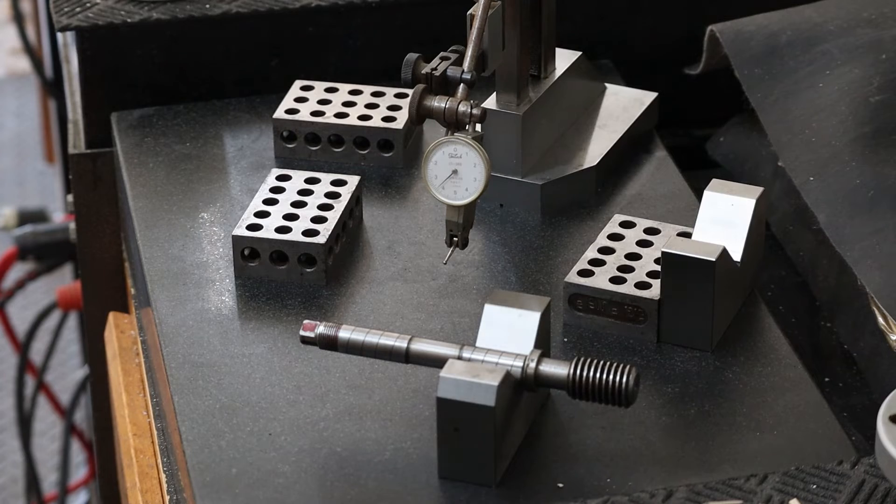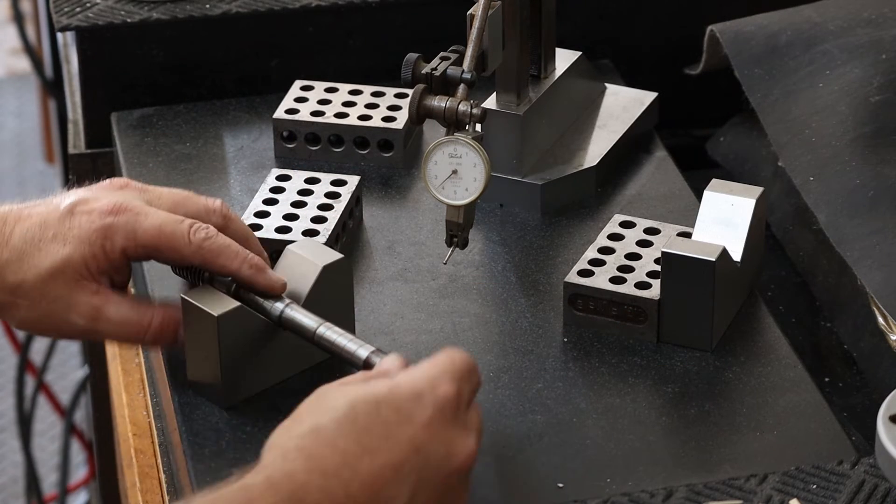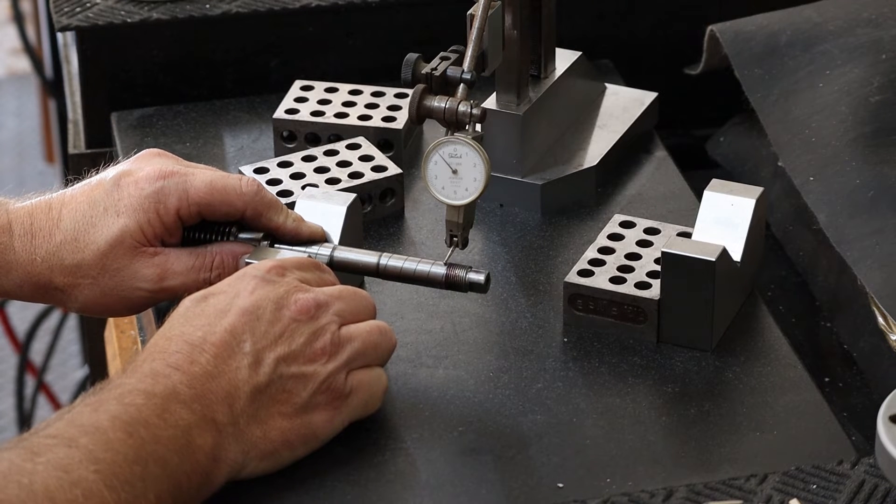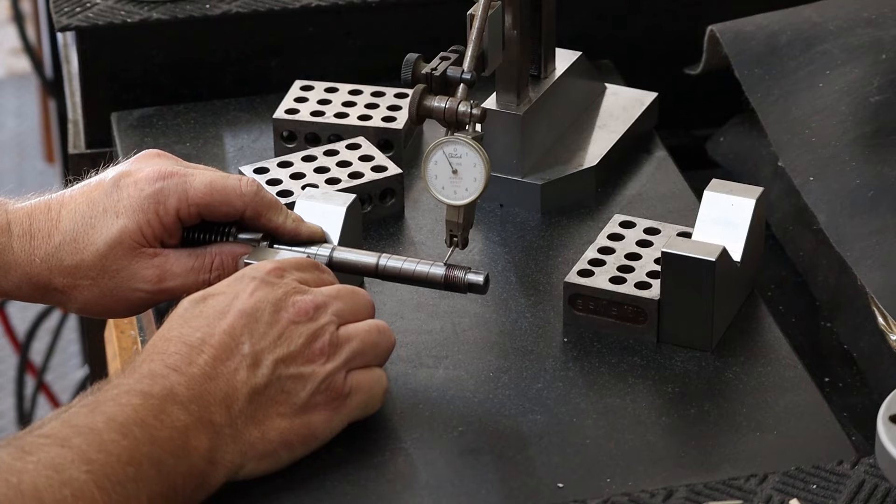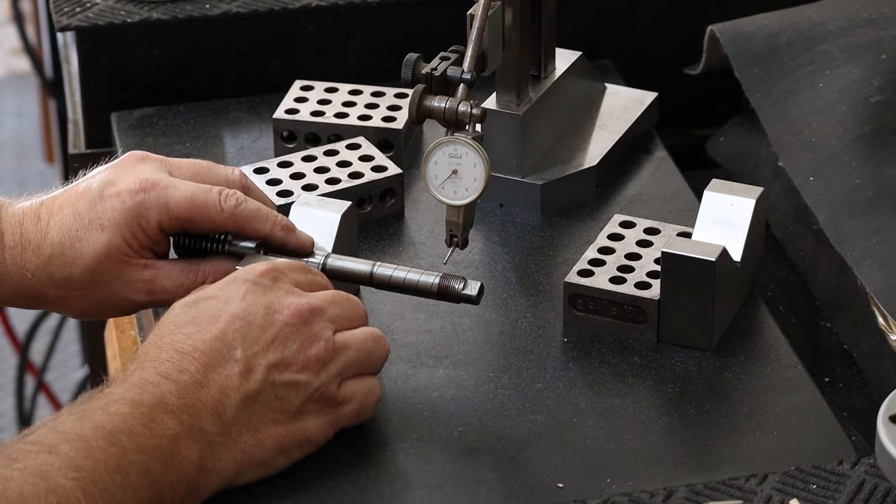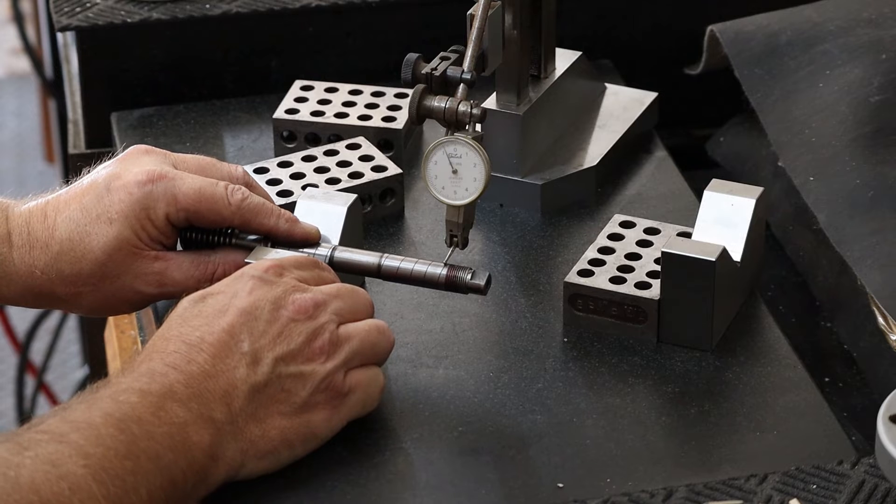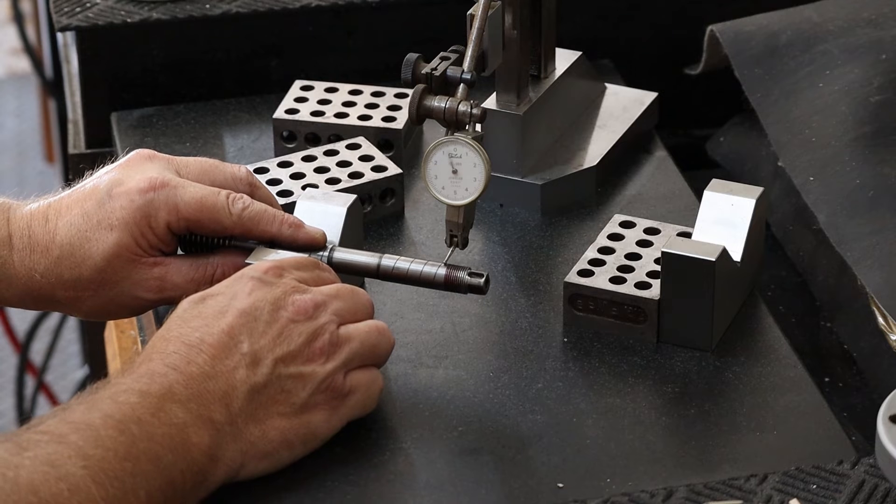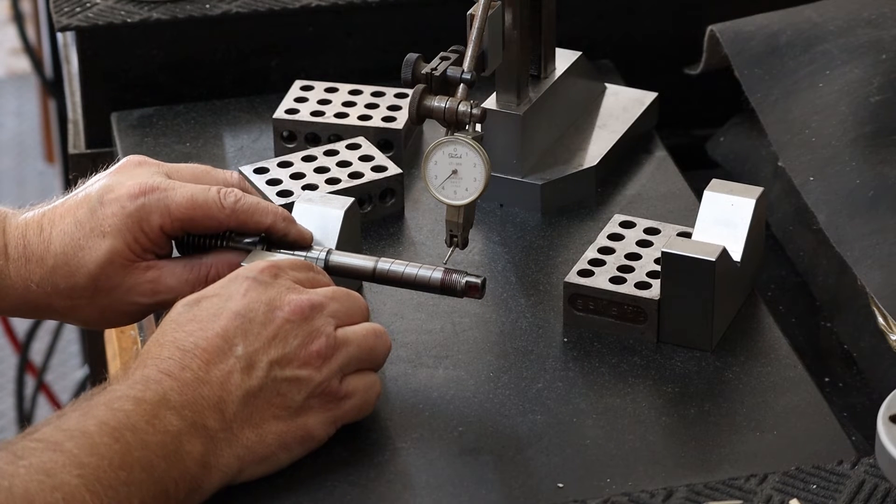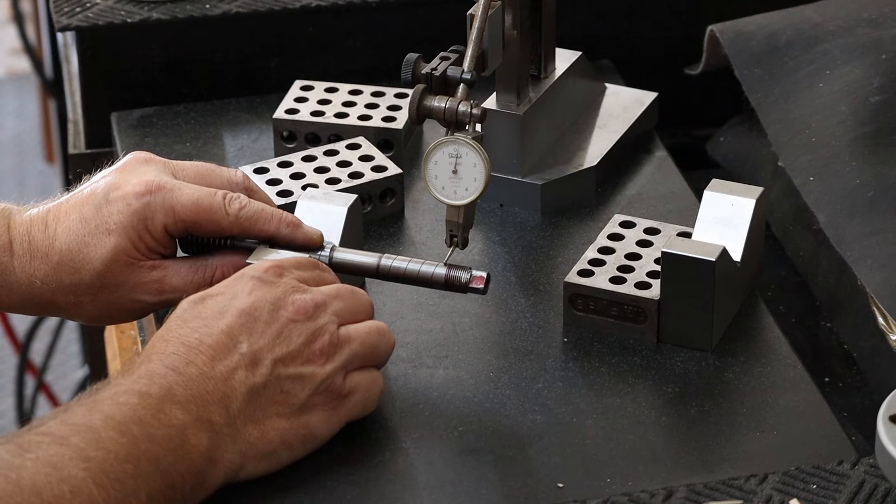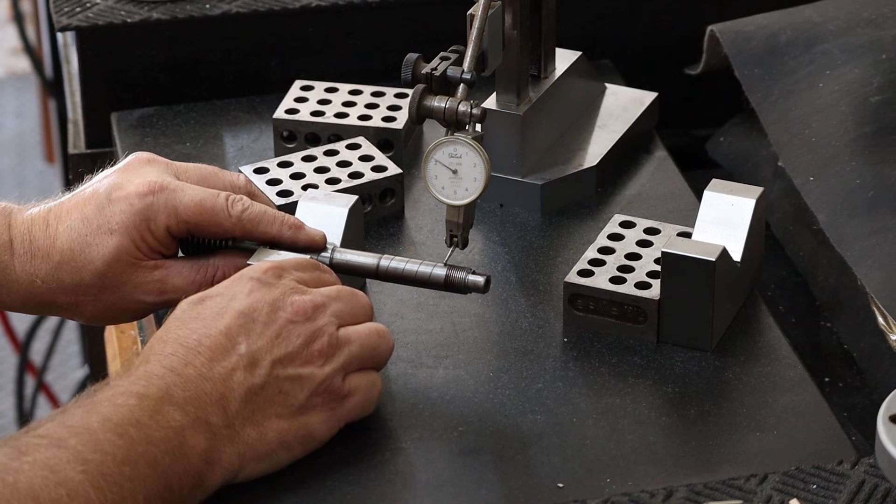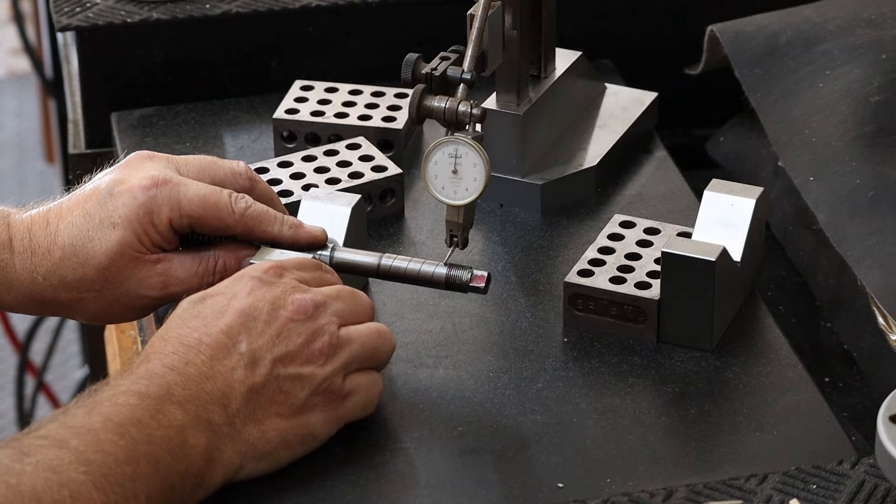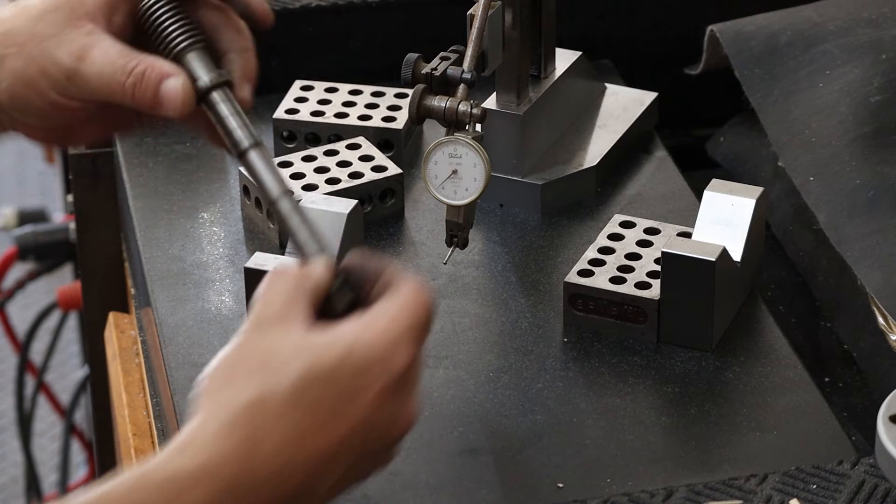So I think I got the shaft pretty straight. Take a quick look. This comes up to minus seven, minus three, plus two. So it's about a thousandth out all around in total. We'll give it one more push. This side right here is a little bit high.